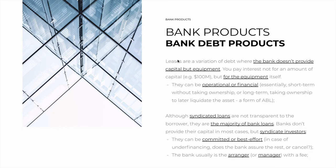Then we have leases. Leases are a variation of debt where the bank doesn't provide capital, but provides equipment — usually it's not the bank's equipment, they act as an intermediary. So you pay interest periodically not for any amount of capital borrowed, but for a piece of equipment that may be worth $100 million. Leases can technically be operational or financial — a subtle distinction. Operational leases are shorter term, and the lessee does not take ownership of the asset. Financial leases are long term, and the lessee may take ownership of the asset to later liquidate it — and that's a form of ABL, because it's used as collateral.